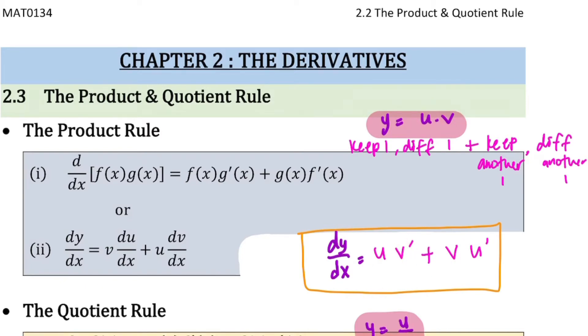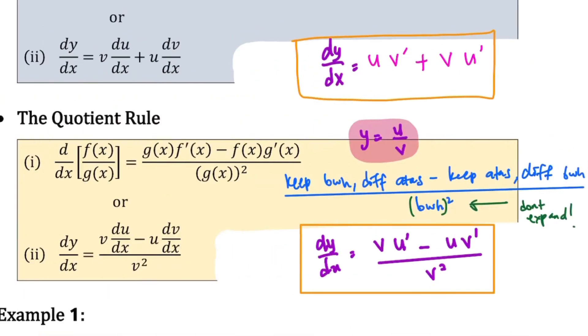So next, we need to see the quotient rule. When should you use quotient rule? When you need to differentiate a function which is a fraction. For example, you have function y equal to u over v.